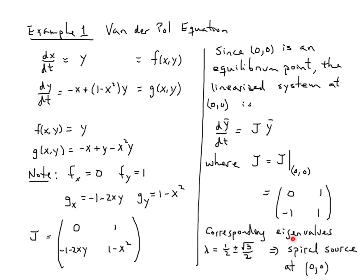So here's our linear system. We look at its corresponding eigenvalues—they are complex, I left off the i—they are complex with a positive real part, which means it's a spiral source. So we know at (0,0) we have a spiral source.